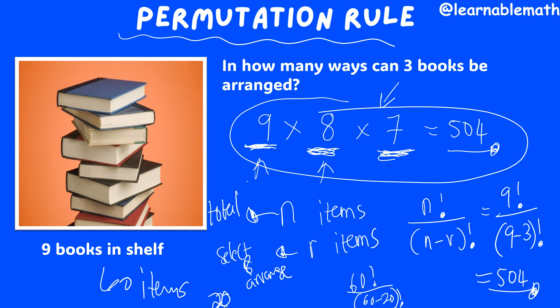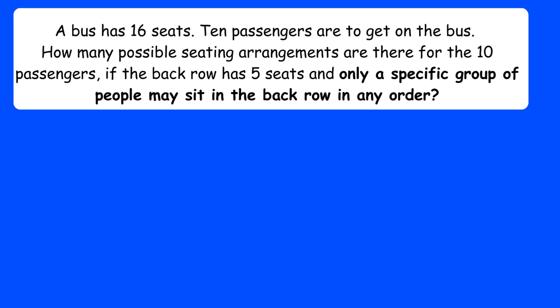Let's look at the main problem for this lesson. A bus has 16 seats. Ten passengers are to get on the bus. How many possible seating arrangements are there for the 10 passengers if the back row has five seats and only a specific group of people may sit at the back row in any order? We have 16 seats, 10 people, and at the back row there's a specific group of five people that must sit there.